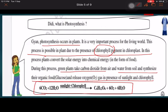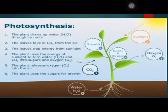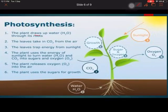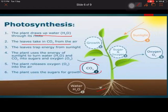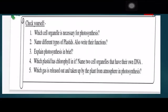You can see from the equation: carbon dioxide and water, in the presence of sunlight and chlorophyll, produce glucose and release oxygen. From the diagram you can see: the plant draws water through roots; the leaves take CO₂ from the air; the leaves trap energy from sunlight; the plant uses energy to convert these into food; the plant releases oxygen; and the plant uses sugar for growth.